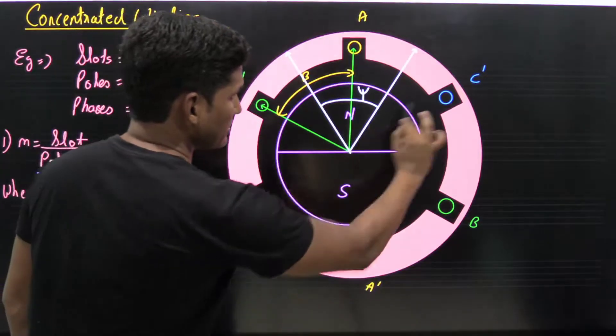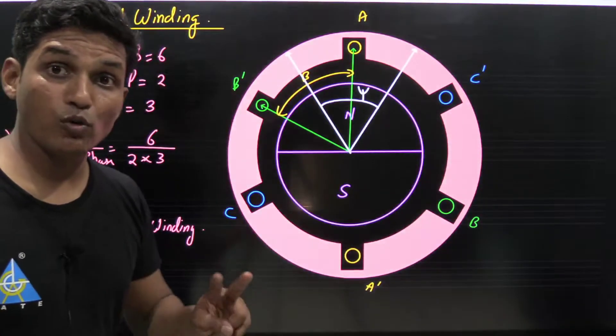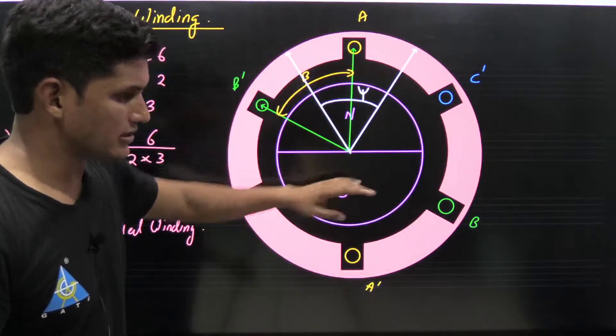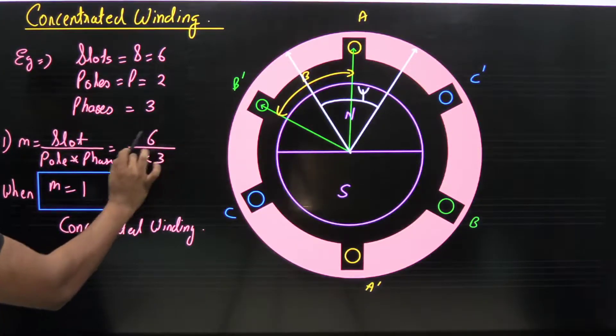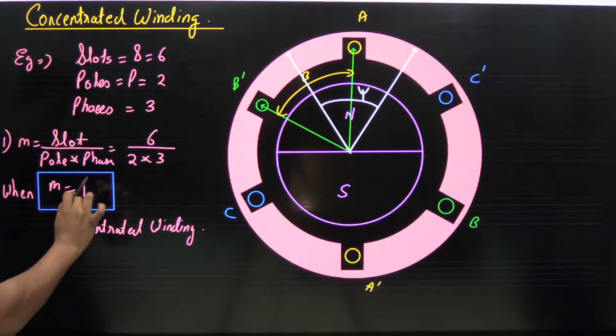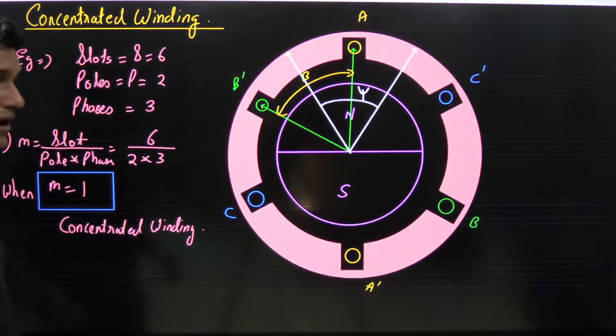Now let's calculate the slot per pole per phase. So if we put the values of slot, pole, and phase, then it becomes 1. That means slot per pole per phase is 1. Hence it is known as concentrated winding.